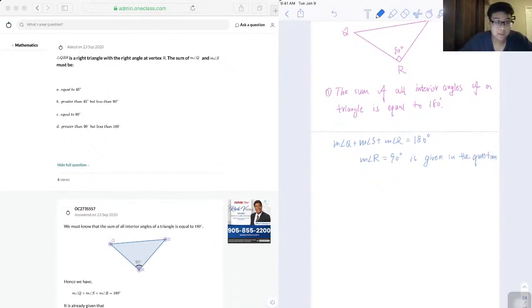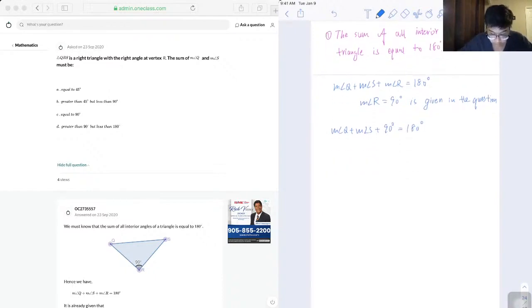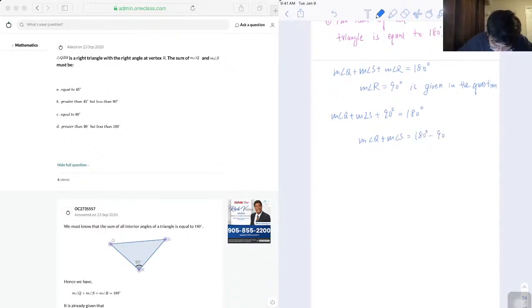So we just need to substitute the value of R into the equation. Our equation becomes Q plus S plus 90 degrees equals 180 degrees. We minus 90 degrees on both sides, which means Q plus S is equal to 90 degrees.